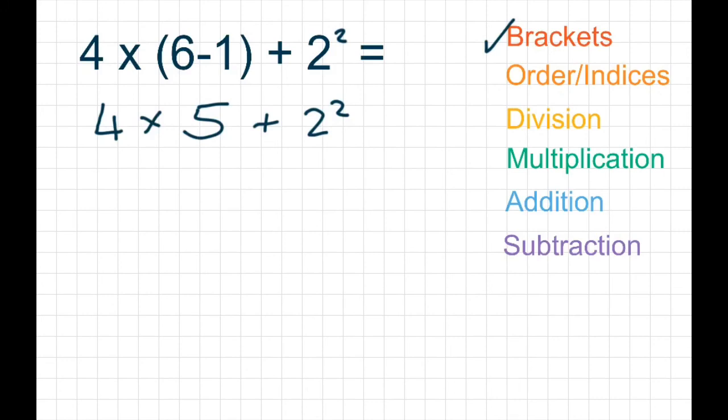Okay, so orders and indices. We've got one of them. So 2 squared, we know from the last sum, is 4. So it becomes 4 times by 5 add 4. We don't have any division, but we do have multiplication. So we need to do that next. 4 times 5 is 20. And we're going to pull down that and add 4.